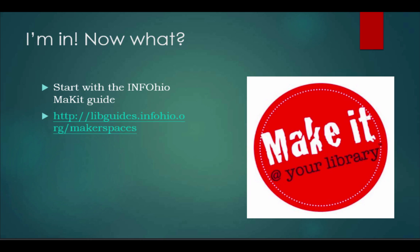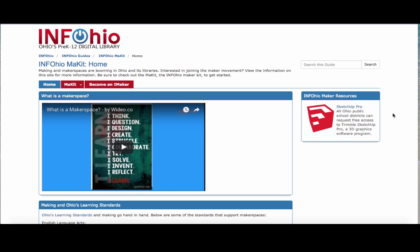Now you're going to start with the InfoOhio Make It or Maker Kit guide, found at libguides.infohio.org/makerspaces. I'm going to quickly go over the InfoOhio Make It with you. Even though InfoOhio is Ohio's pre-K through 12 digital library, this maker kit is open to anyone, no matter what area you work in and no matter what state you live in. On the homepage, there is a short video that explains what a makerspace is — very similar to what we already talked about.